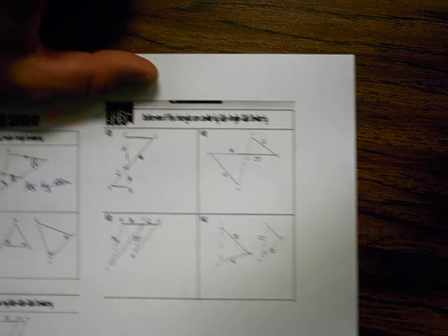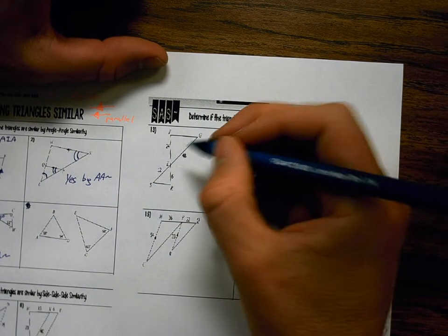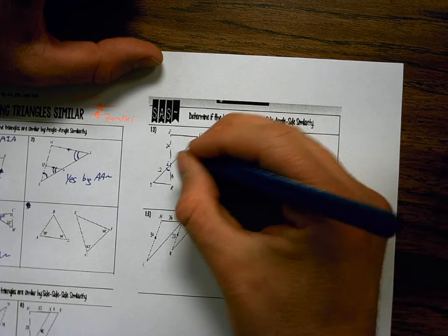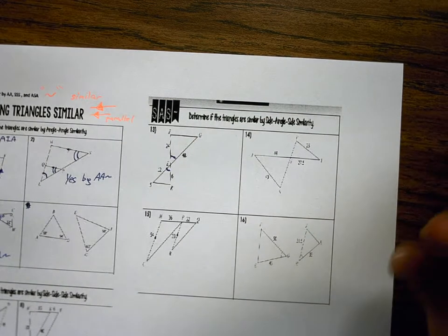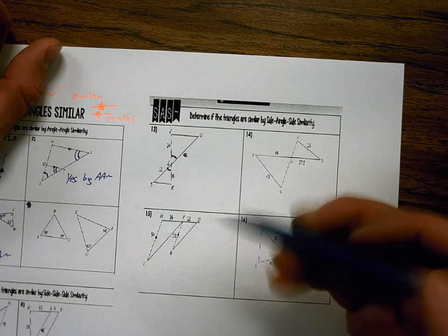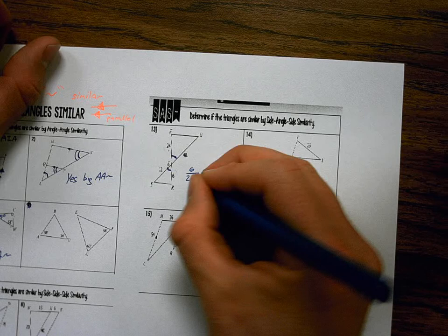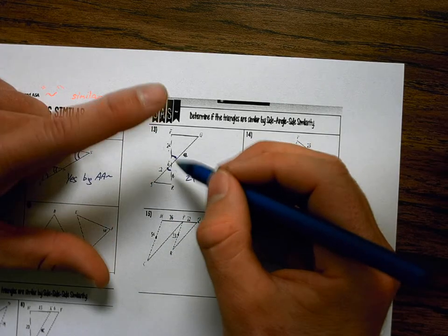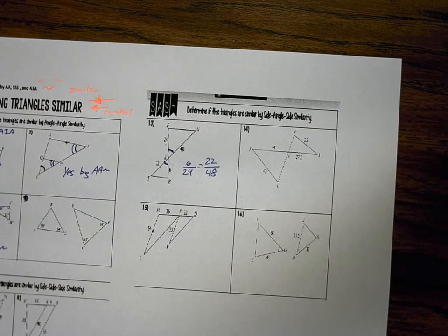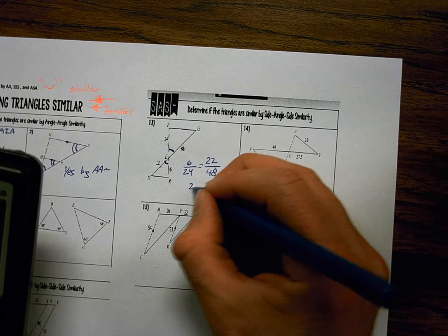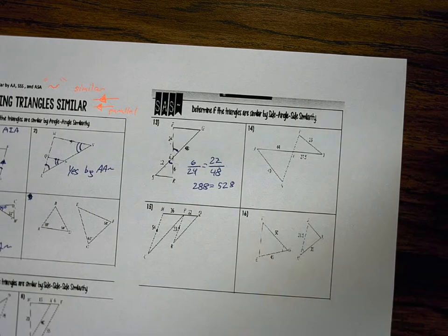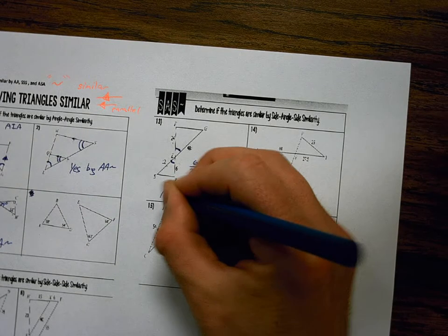Number 13. That's 48. 24. So determine if the triangles are similar by side angle, side similarity. Well, I'm given vertical angles. Those are congruent. Both of these angles are included to the two sides given. The smallest side on this triangle is 6. The smallest side on this one is 24. The smallest side on, or the biggest side on this triangle is 22. Biggest side on this one is 48. Cross multiply. 6 times 48. 288. 24 times 22. 528. Are the sides proportional? No. So the triangles are not similar.